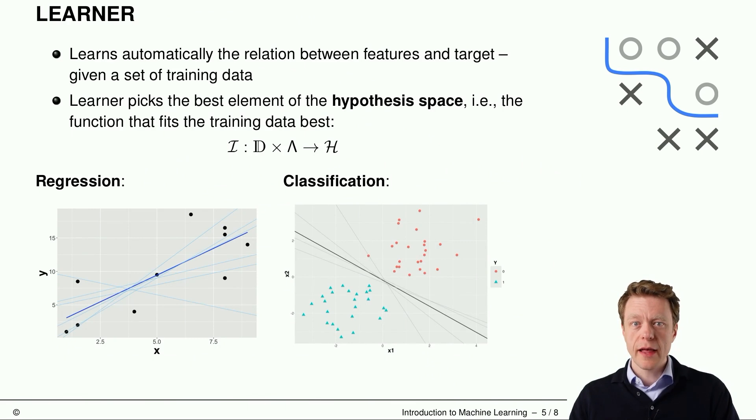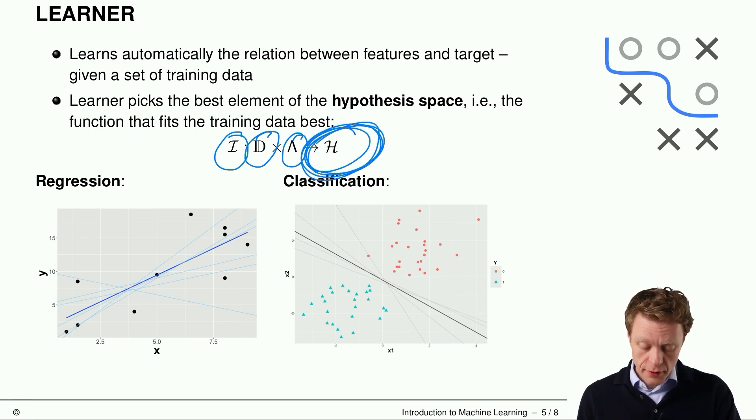The algorithm that helps us finding the best member of the hypothesis space or the best model for our data situation is called learner or also inducer or learning algorithm. It learns or tries to learn automatically the relation between features and target for a given set of training data. So we feed into the learner or inducer, that's why it's an I here, the dataset and some control parameters lambda, which we will see later, which are also called hyperparameters. And the output of the learner is one member of the hypothesis space h, which hopefully fits the training data best.